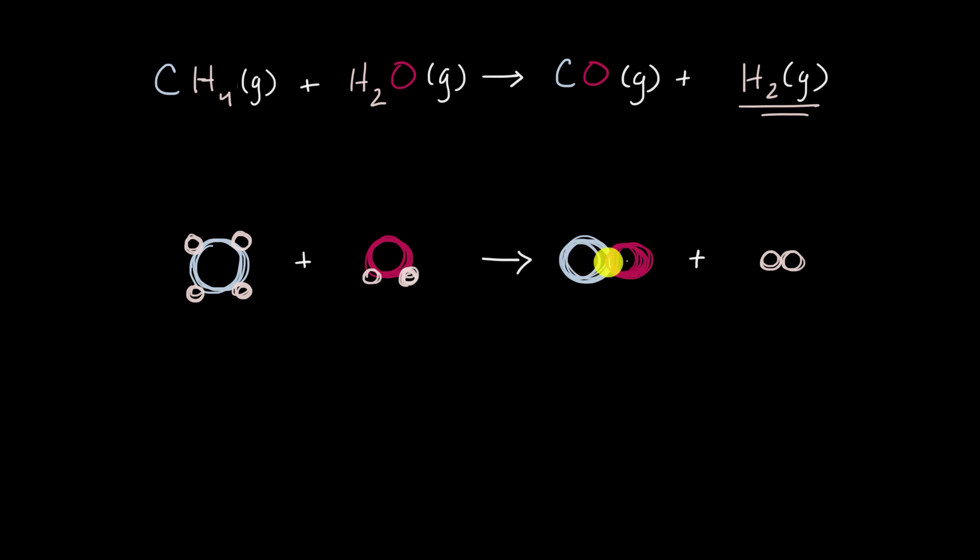You get a carbon monoxide molecule, or at least how I've visualized it. So you have a carbon and an oxygen. And then I draw the molecular hydrogen. Molecular hydrogen has two hydrogens bonded to each other, and that is what I have depicted here.